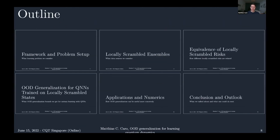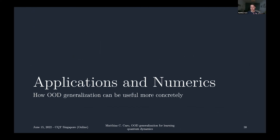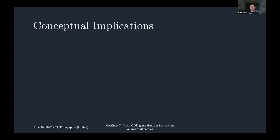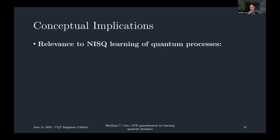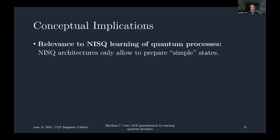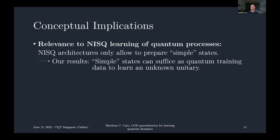Let me mention some conceptual implications before the numerics. First, relevance to near-term devices: if you have a NISQ architecture and try to generate training data, you can probably only prepare simple states — not highly entangled states. Our results say that's okay, because simple states can suffice as quantum training data to learn an unknown unitary, even if what you care about is how the unitary acts on more complicated entangled states.